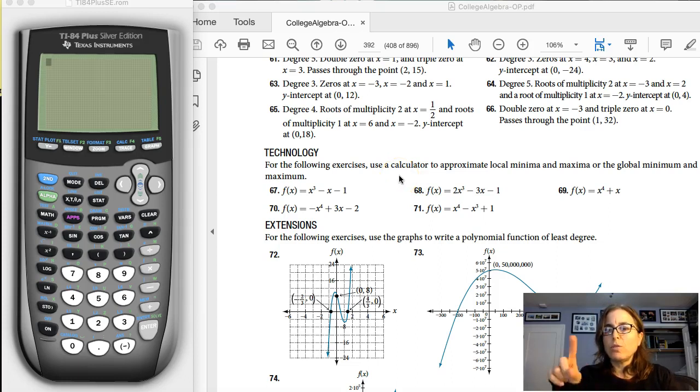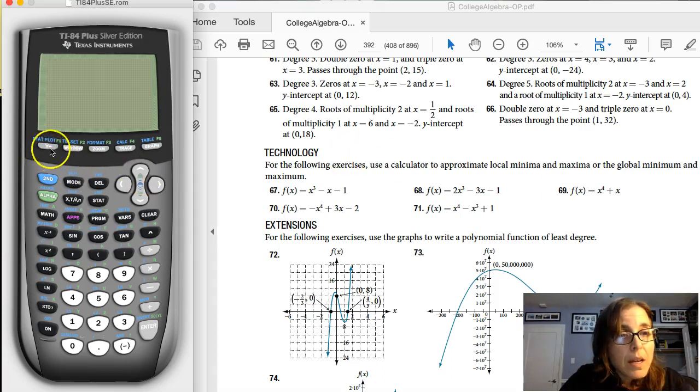So quartics usually look like a W, and I say W but not M because I have a positive coefficient here of positive 1, so both ends are going to be up. So let me hit y equals, there we go.